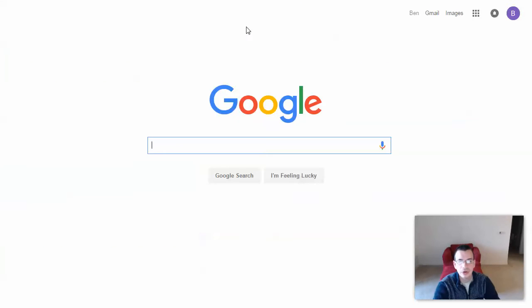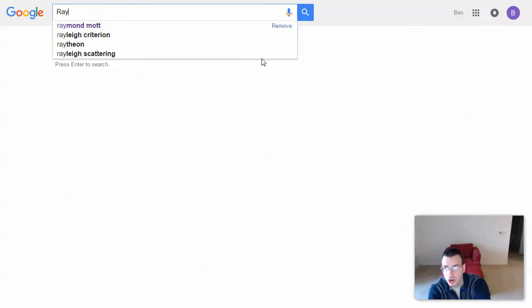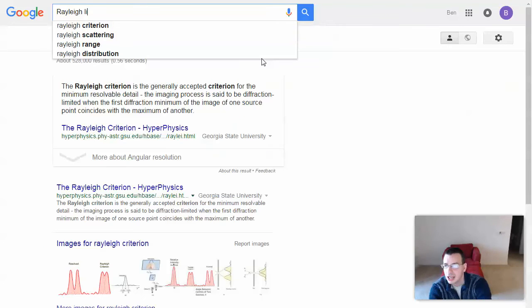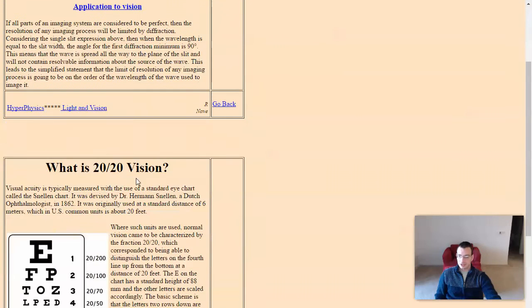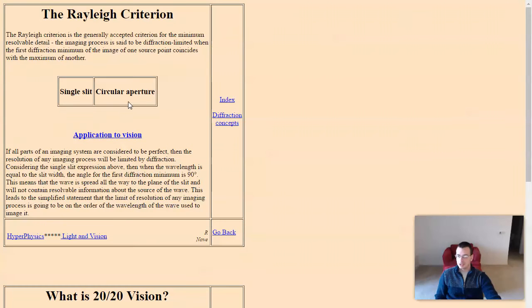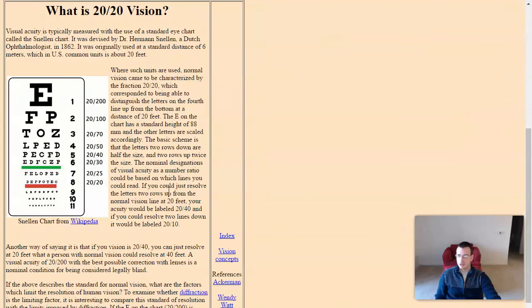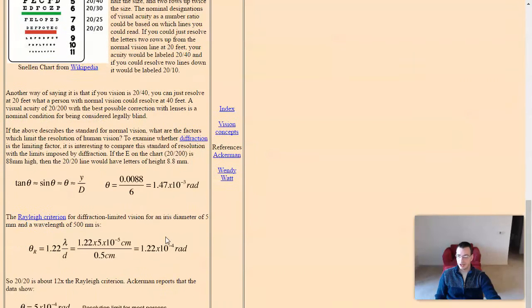Let's try this out. Rayleigh criterion, that sounds good. Come on, hyperphysics. Yes, here it is: 20-20 vision, Rayleigh limit, single slit, application of vision. Let's go to this one. Nope, it's not what I want. Aha, this is it.